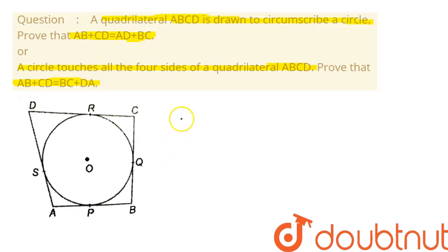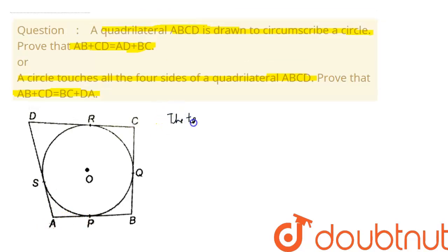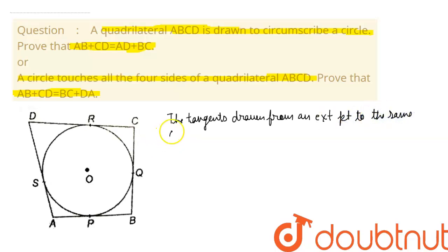To solve this question, we are going to use one theorem of circles. We know that whenever we draw tangents from an external point to the same circle, the tangents drawn from that external point to the same circle are equal in length.